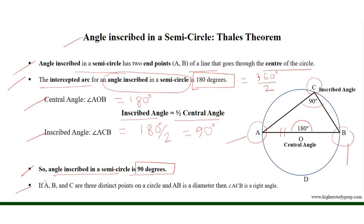If A, B, and C are three distinct points on a circle and AB is the diameter of the circle, then angle ACB is always a right angle, equal to 90 degrees.